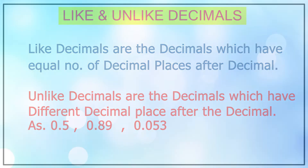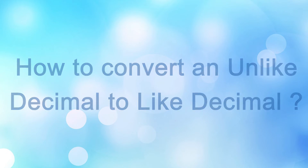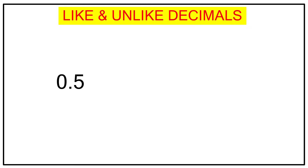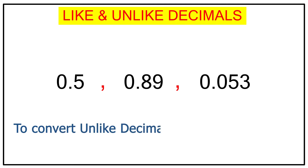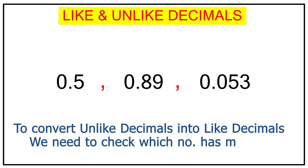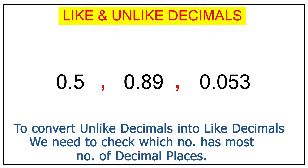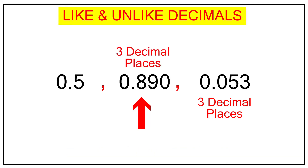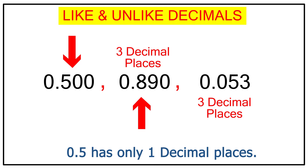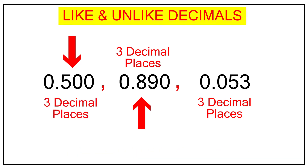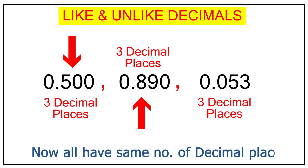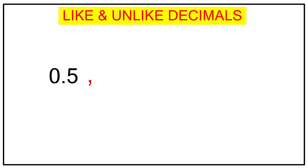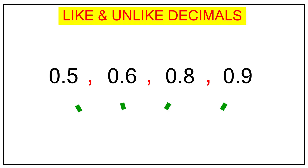Now let's see how to convert an unlike decimal into a like decimal using the same example: 0.5, 0.89, and 0.053. To convert, I need to check which number has the most decimal places. Here, 0.053 has 3 decimal places. Then 0.89 has 2 decimal places, so I add a zero to make it 0.890. For 0.5, I add two zeros to make it 0.500. Now all three numbers have equal decimal places and are like decimals. For example, 0.5, 0.6, 0.8, and 0.9 are already like decimals because they all have one decimal place.